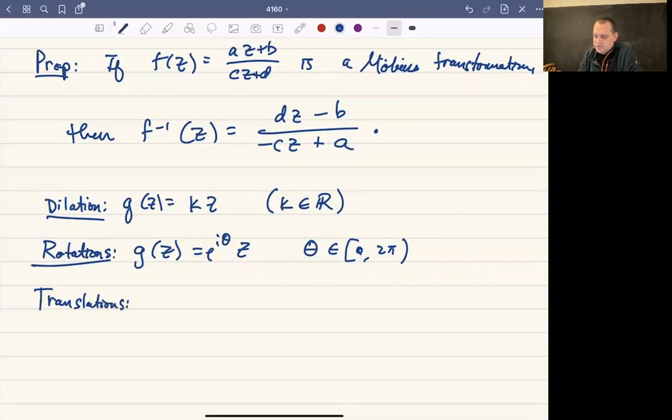Translations are functions of the form g(z) = z + a. So what you're doing is you're just taking the function and then transforming it by some a units where a is a complex number, so a can be whatever complex number we want. And I'm sorry, I forgot one more. There's also inversions.